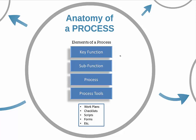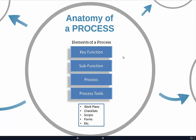Within those four key functions, you have categories or subfunctions, and you can have as many as you like. For example, within sales and marketing you might organize processes into three subcategories: processes for generating leads, processes for nurturing and converting those leads into long-term loyal clients, and processes for client retention. These are completely customizable — you could have one subfunction or several. It's completely up to you.